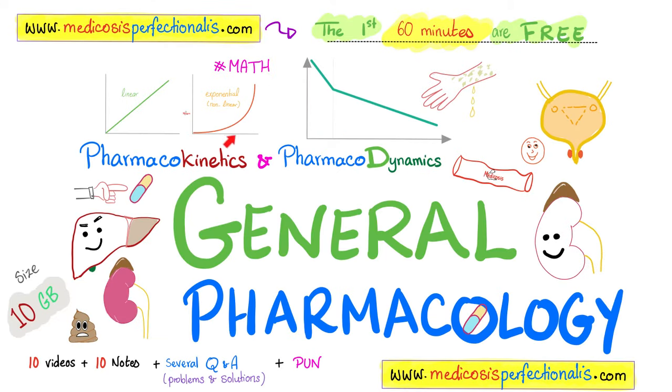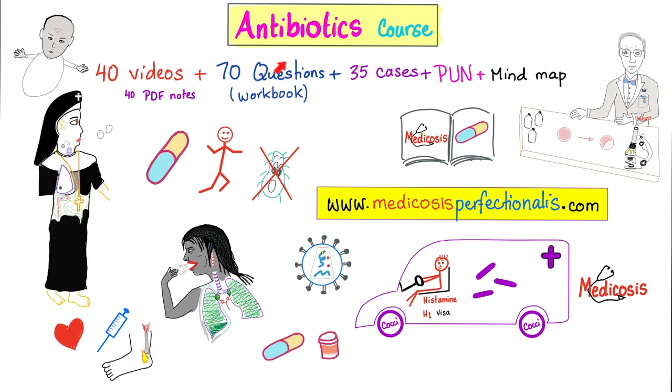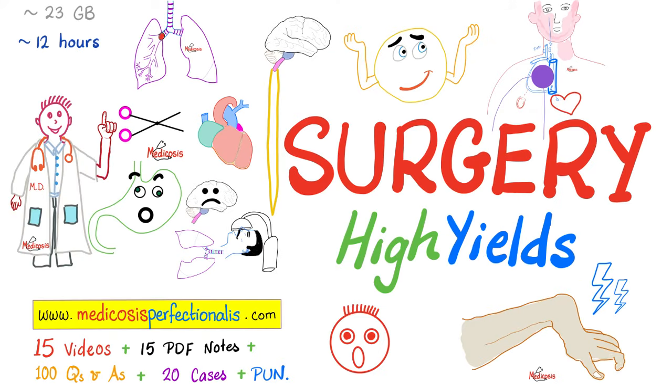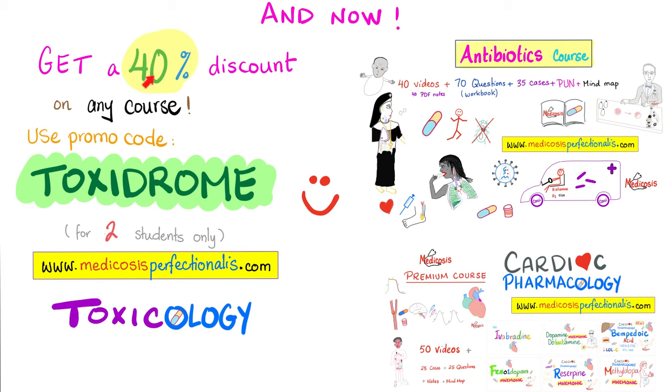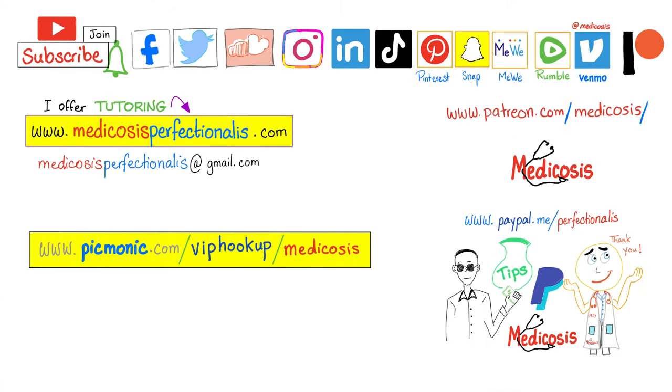I even have more graphs and more math in my general pharmacology course available at medicosisperfectionalis.com. I also have an antibiotics course and a brand new surgery high yields course. And for a limited time, you can get a 40% discount towards anything on my website by using promo code TOXIDROME.